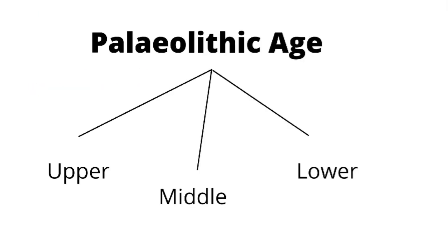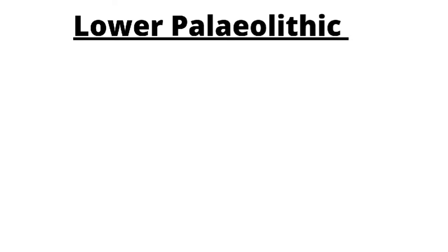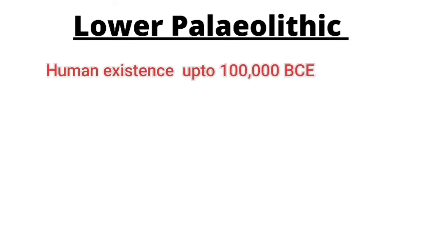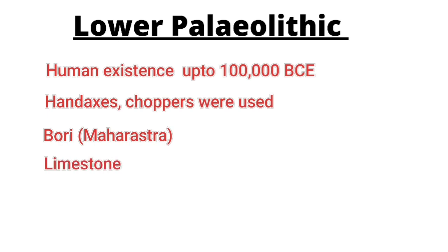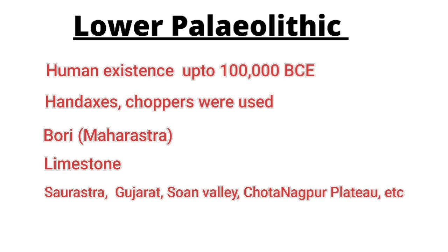The Paleolithic age can be divided into upper, middle, and lower Paleolithic. The lower Paleolithic is the period extending from human existence up to 100,000 BC, covering a greater part of the ice age. Hunters and food gatherers were the main people, and hand axes and choppers were used. Bori in Maharashtra was one of the most important oldest paleolithic sites. Limestone was used to make tools. Major sites were found in Saurashtra (Gujarat), Swan Valley, sites in the Thar Desert, Chotanagpur Plateau, central India, and north of the Kaveri River.